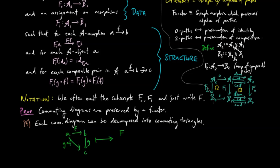which means that, for example, the image of this commuting triangle under the functor is also a commuting triangle. And finally,